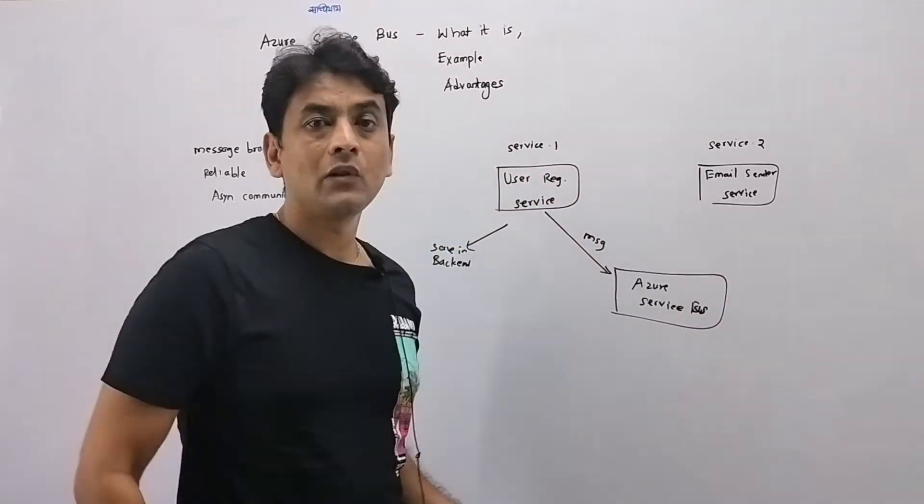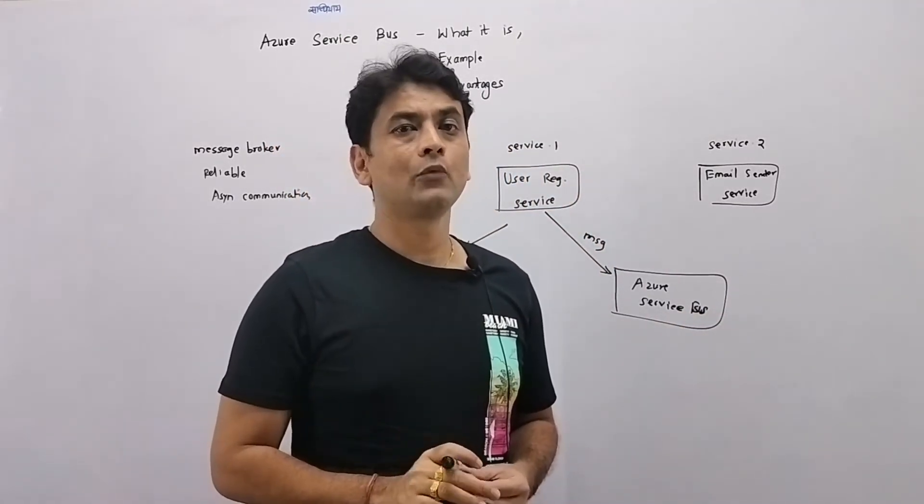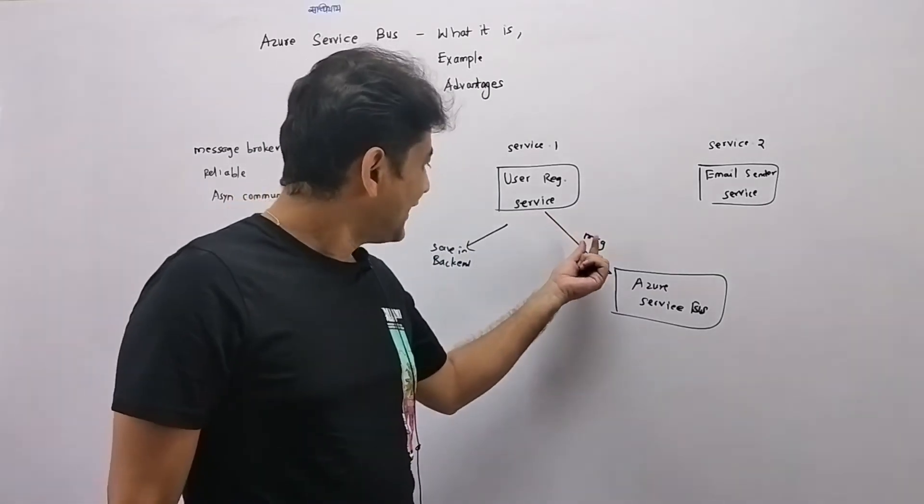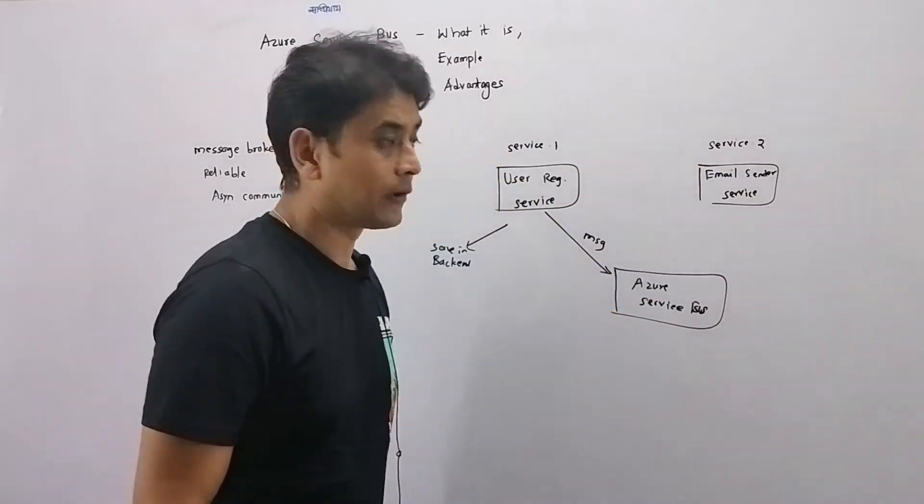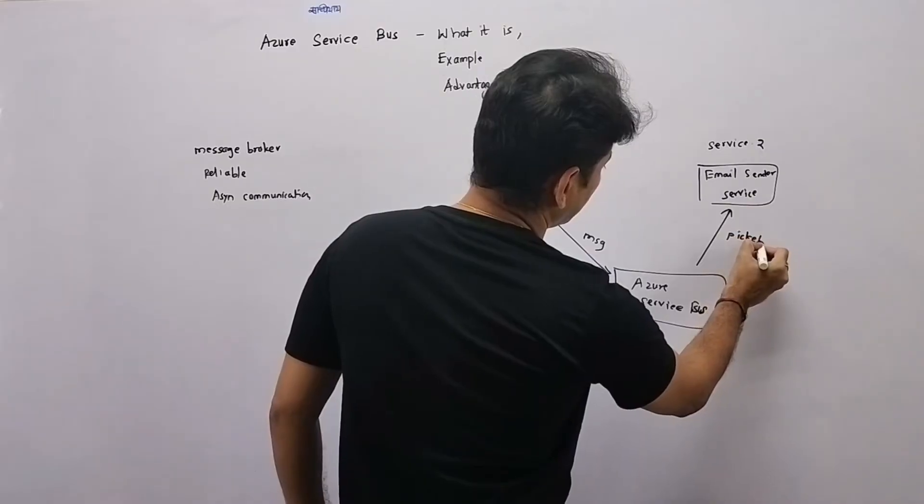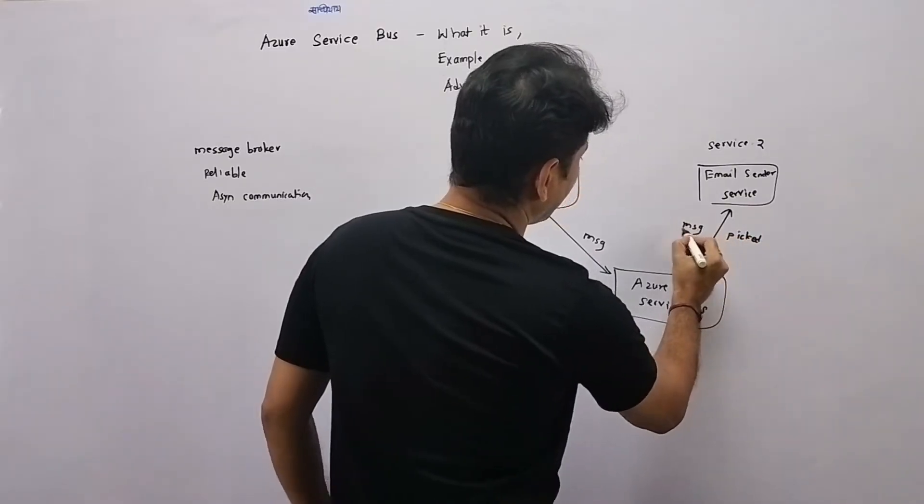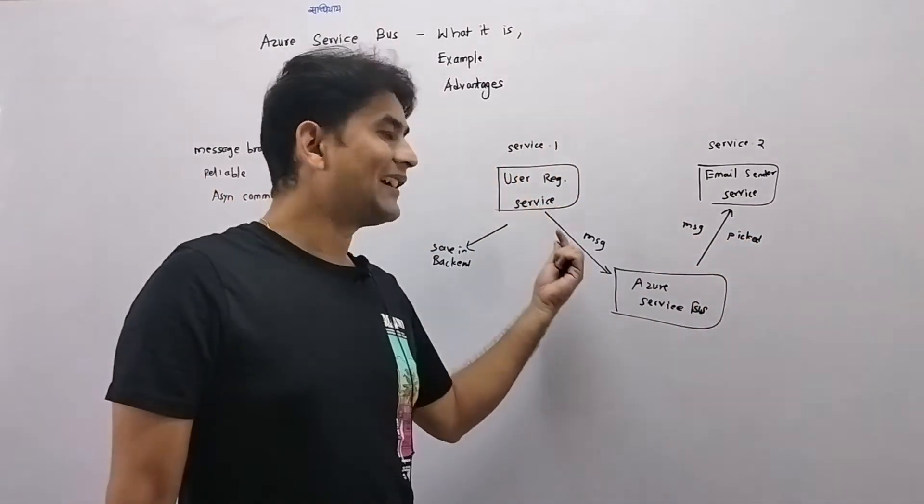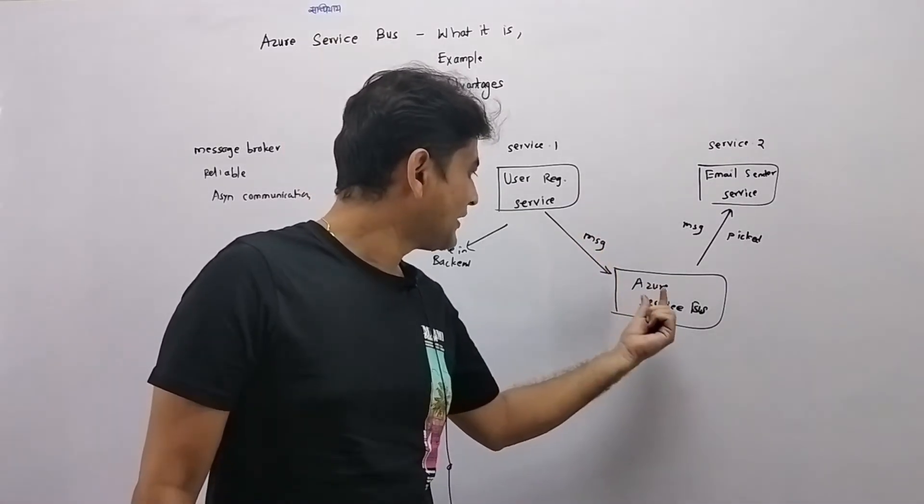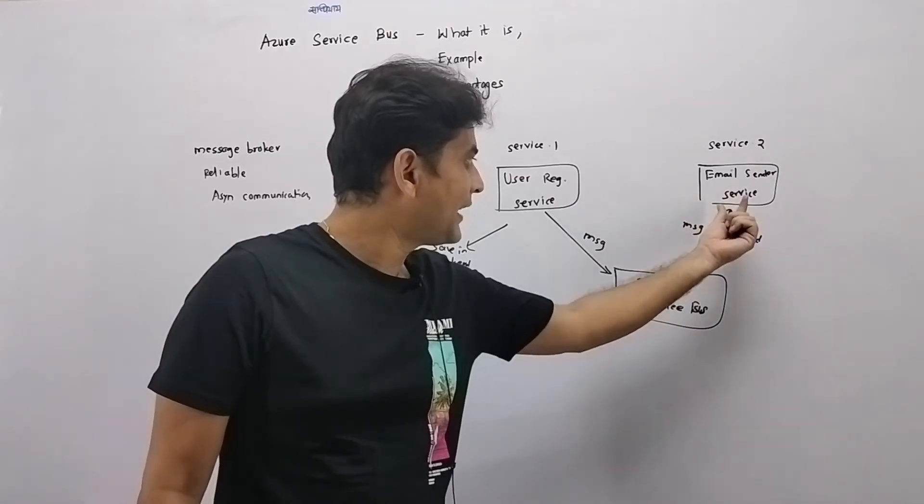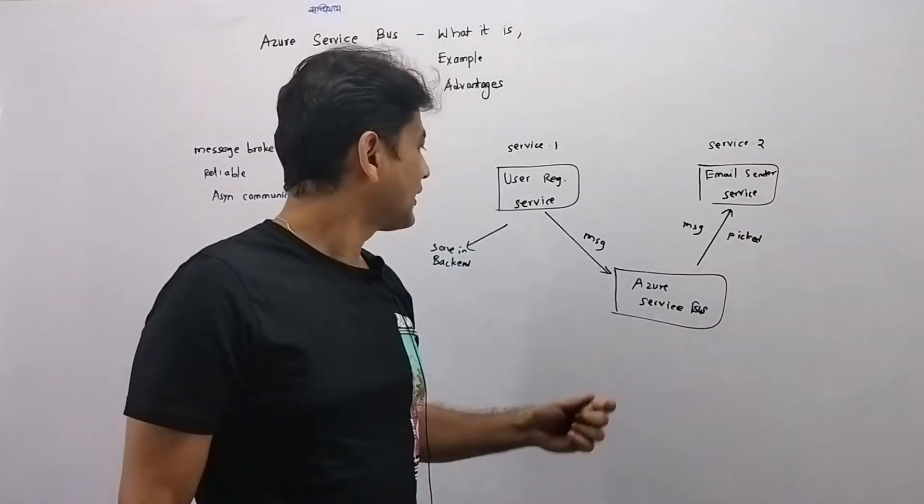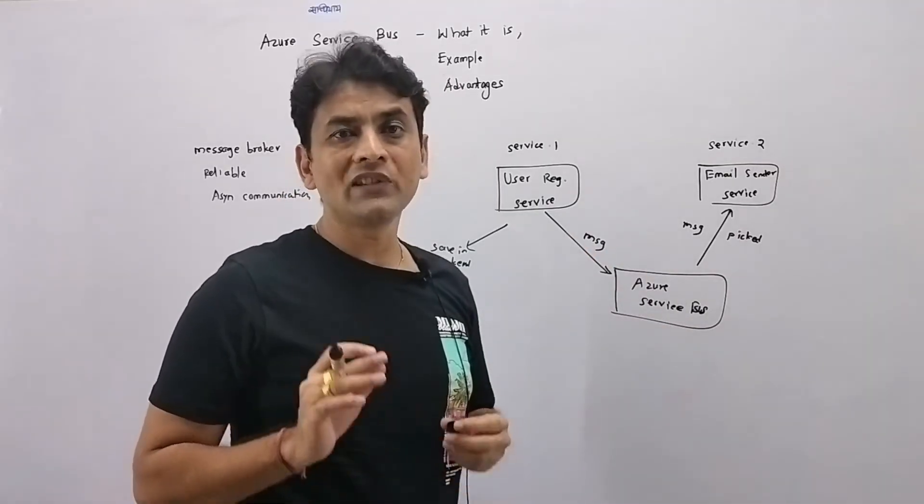And that message will contain all the details which are required to send an email. So this message now will be picked up by this email service. So again, this service sends a message which contains all the details for that email. And that message which we send to Azure Service Bus, it will be picked up by this email service. And then email service will form the email and send that email. So that way we can use Azure Service Bus.